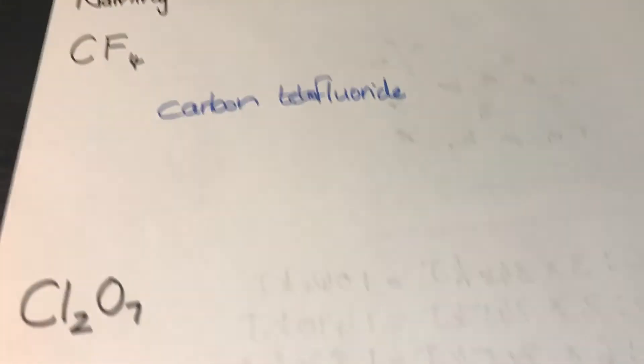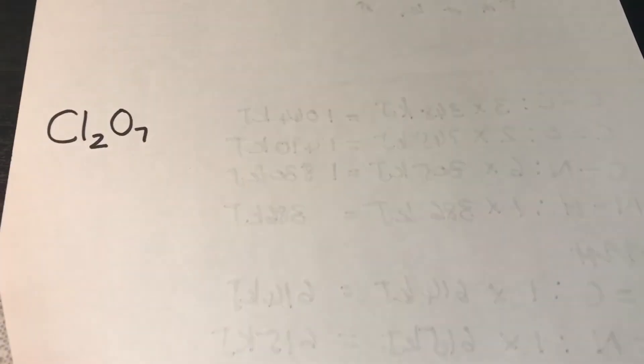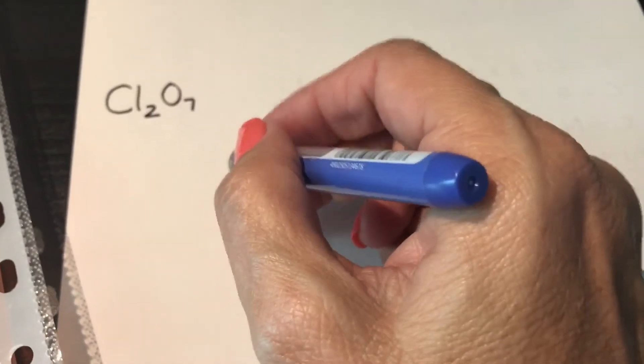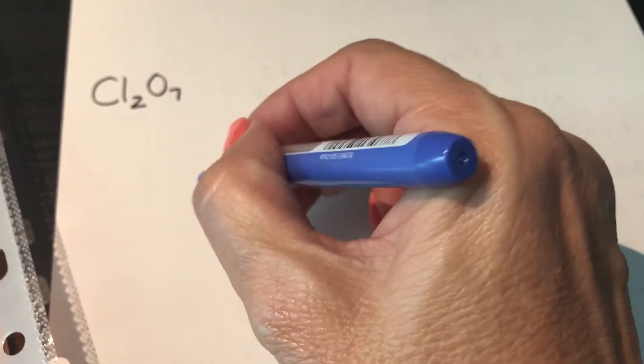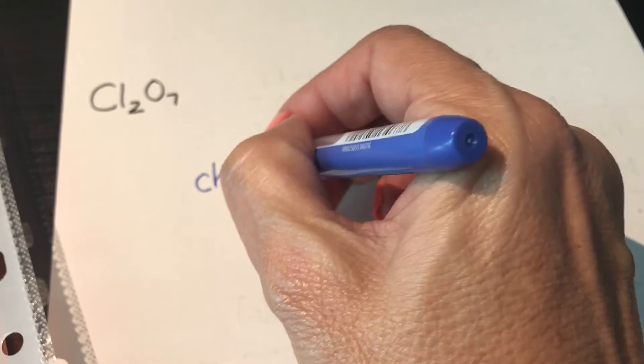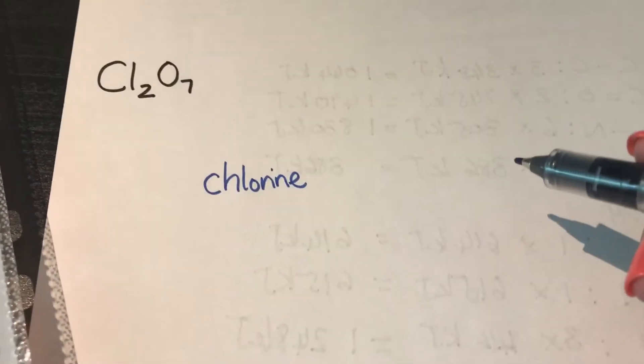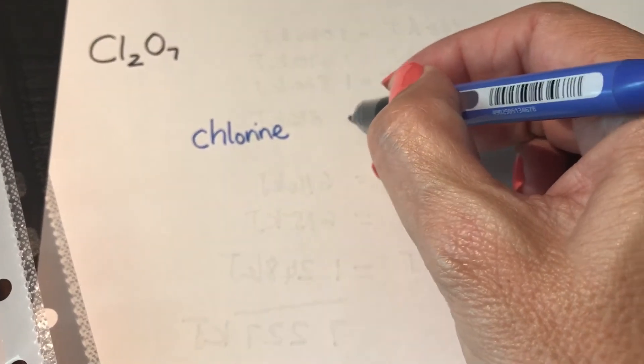If I had two carbons, if my first element is more than one, then I will also have a prefix for the first element. But the rule stays the same. My first element is chlorine, so I will write down the word chlorine. My second element is oxygen, and oxygen becomes oxide.